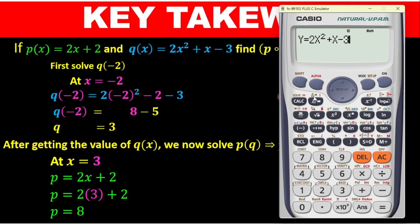To chain the functions, you need to introduce the colon symbol. Press Alpha, then just below Alpha you'll see the colon button — press it and the colon will appear. This tells the calculator you haven't finished entering your equation; there is one more to enter. After the colon we enter p(x), but notice — we are not going to enter 2x + 2 directly, as that will give an error.